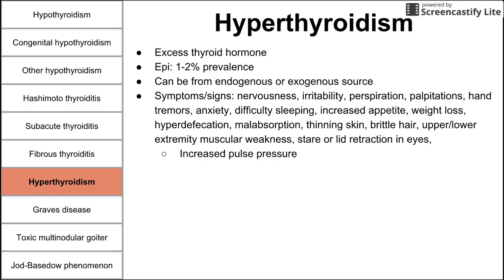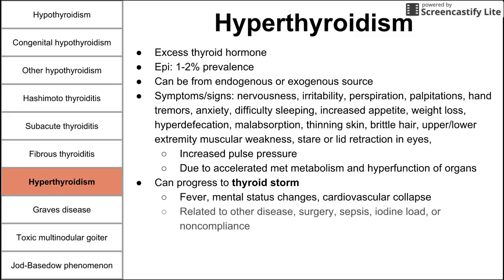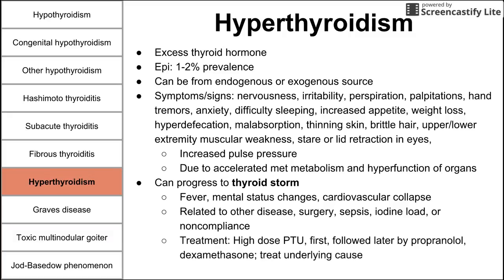There is increased pulse pressure with hyperthyroidism. These symptoms result from accelerated net metabolism and hyperfunctioning of organs. Untreated hyperthyroidism can progress to thyroid storm — the opposite of myxedema coma — characterized by fever, mental status changes, and cardiovascular collapse, often related to other illnesses, surgery, sepsis, or non-compliance with antithyroid medications. Treatment is high-dose PTU, followed by beta blockers and dexamethasone, plus addressing the underlying cause.